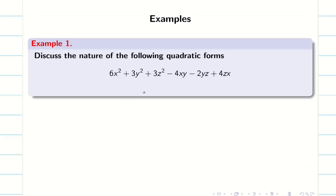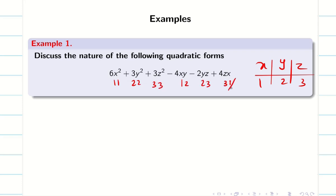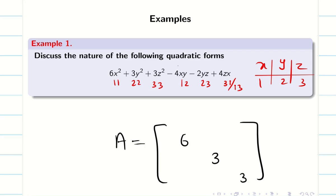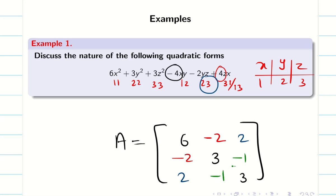Problem 1: Discuss the nature of the quadratic form. Whenever we see XYZ, take them as positions 1, 2, 3. Writing the matrix A: the diagonal elements are 6, 3, 3. The (1,2) position has coefficient −4, so we write −2, −2. The (1,3) position has +4, so we write 2, 2. The (2,3) position has −2, so we write −1, −1. The matrix is now ready.